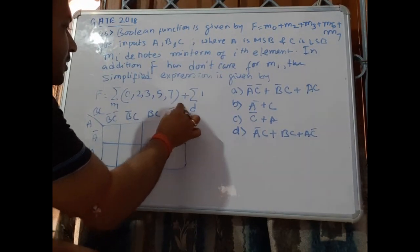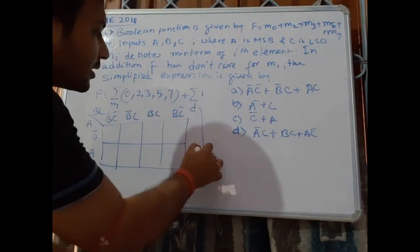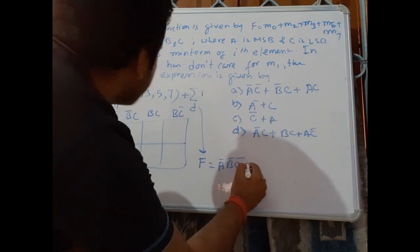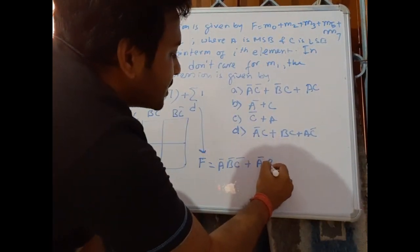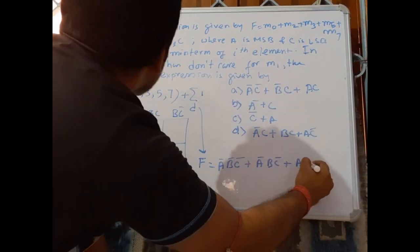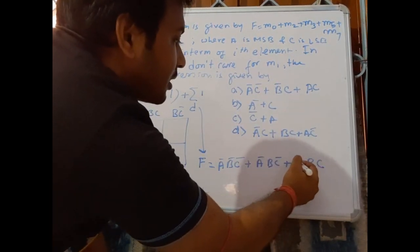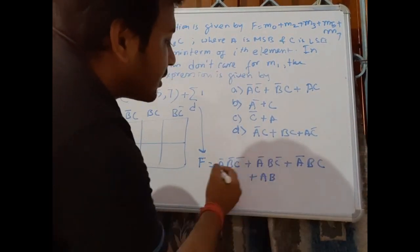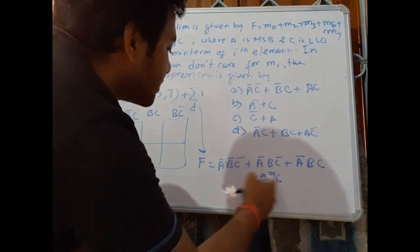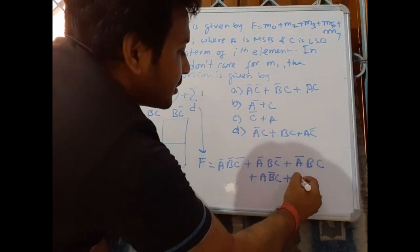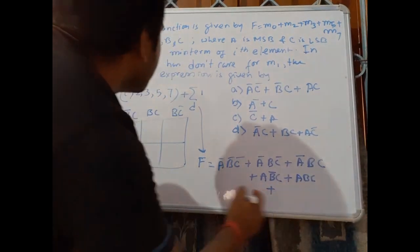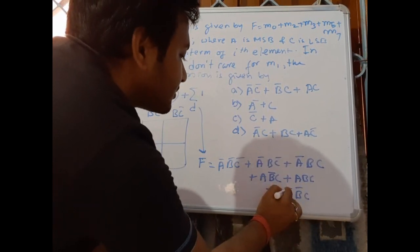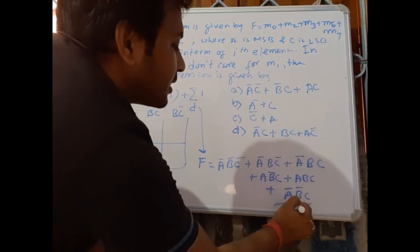The function f has minterms: m0 = ā b̄ c̄, m2 = ā b c̄, m3 = ā b c, m5 = ab̄c, m7 = abc. And we have a don't care for m1, which is ā b̄ c.